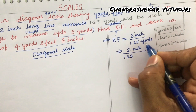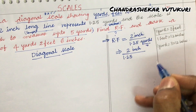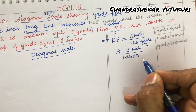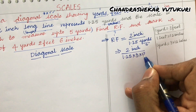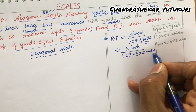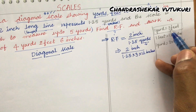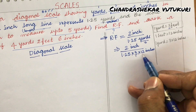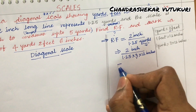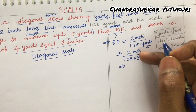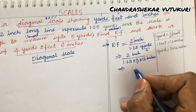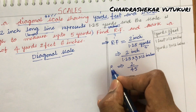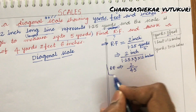1.25 yards is written as 1.25 × 3 × 12 inches. So RF = 2 divided by (1.25 × 3 × 12). Upon calculation, it is found to be 2 upon 45, and that is the RF of the scale.